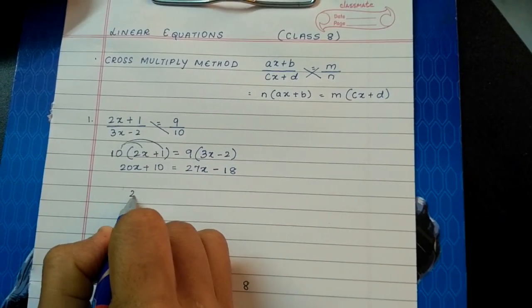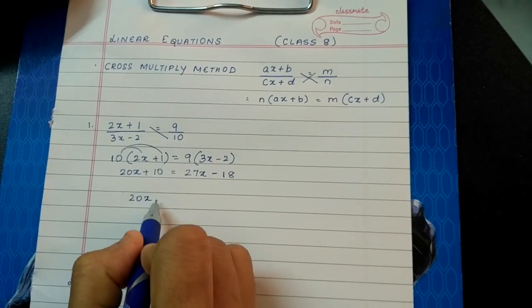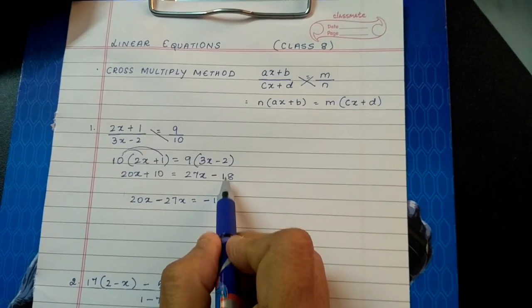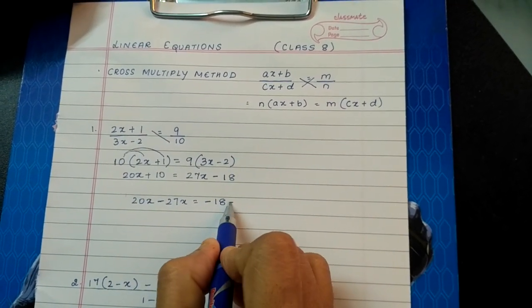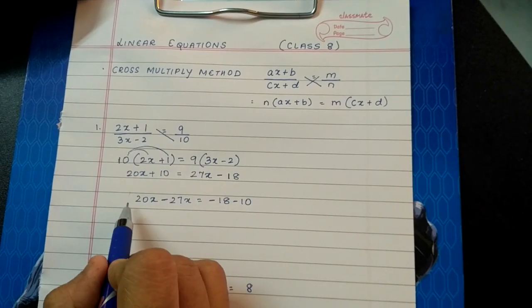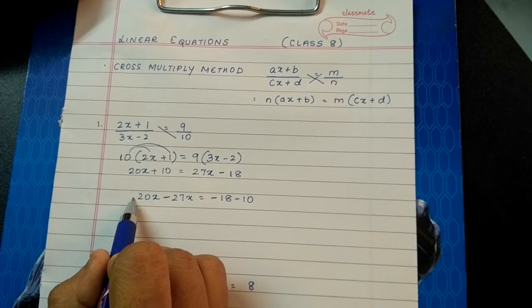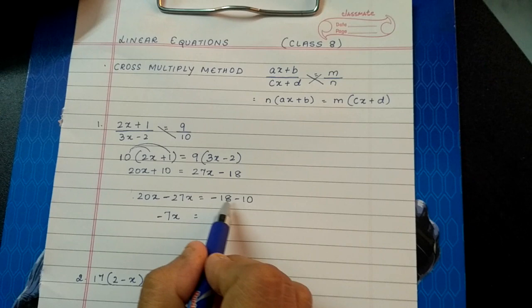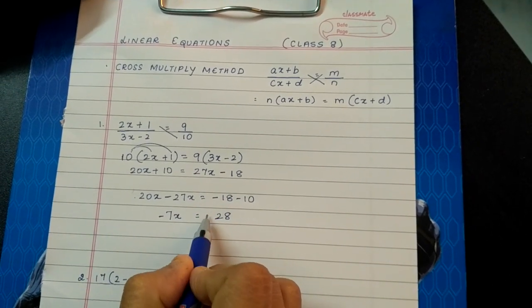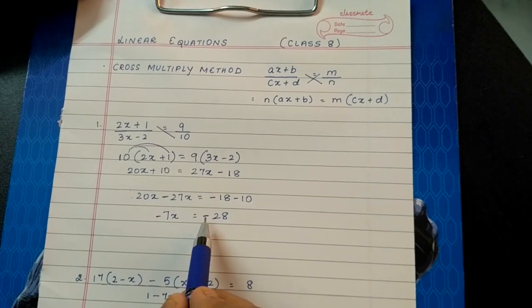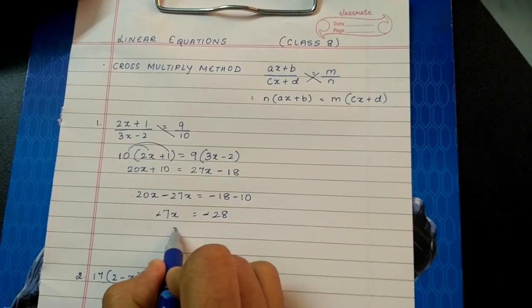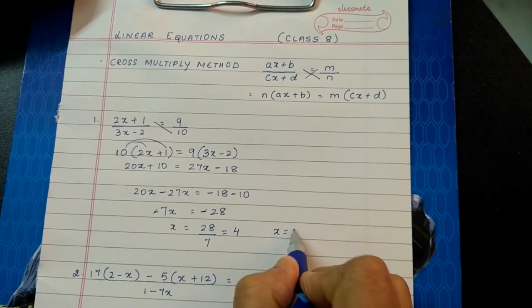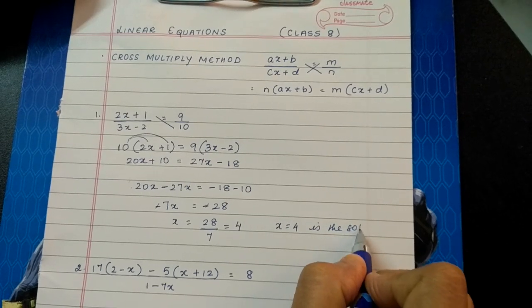So we will bring 27x from right hand side to left hand side, so sign will change, and minus 18 which is in the right hand side will remain as it is, and plus 10 when it comes from left hand side to right hand side becomes minus 10. Now this is addition and subtraction of integers. One plus one minus means we subtract and put the sign of greater number. There is a negative sign on both sides, so we will cancel it. So x is 28 divided by 7, which is 4. So x equals 4 is the solution for this equation.